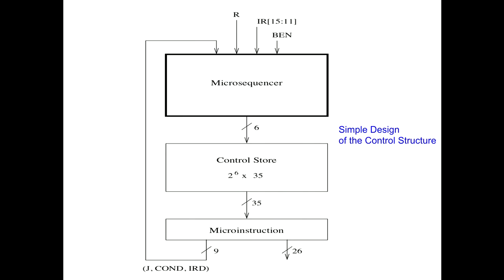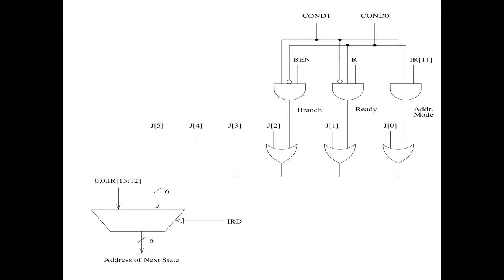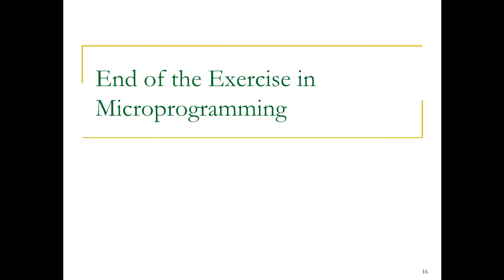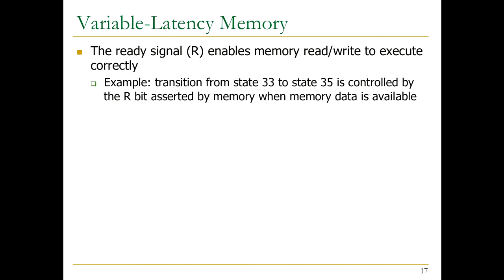We've looked at the control signals. It's a simple design of the control structure — that's what microprogramming enables. Your microprogram has all of your control signals stored in the control store, except those that need to be generated based on what's going on in the data path at the moment. You have a nice microsequencer, and this is basically the definition of your state. Microsequencer design depends on the state machine, and this is a relatively minimal microsequencer — you could make it much more complicated.